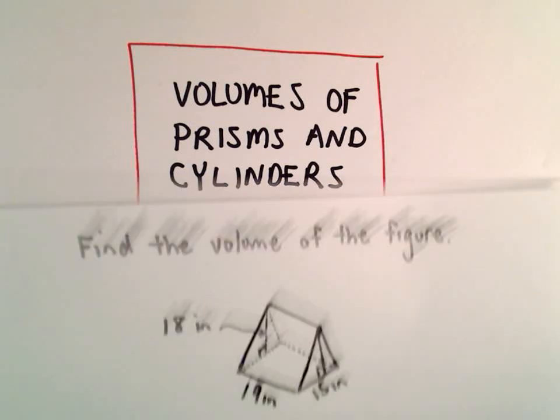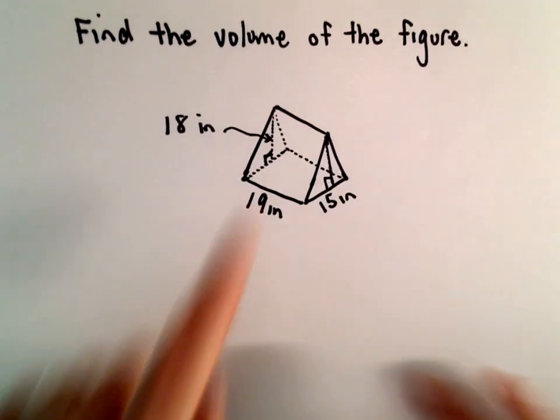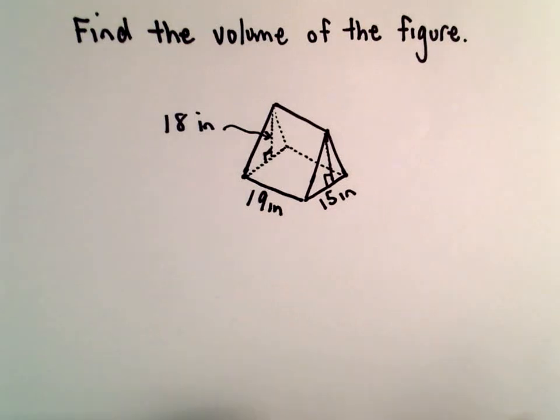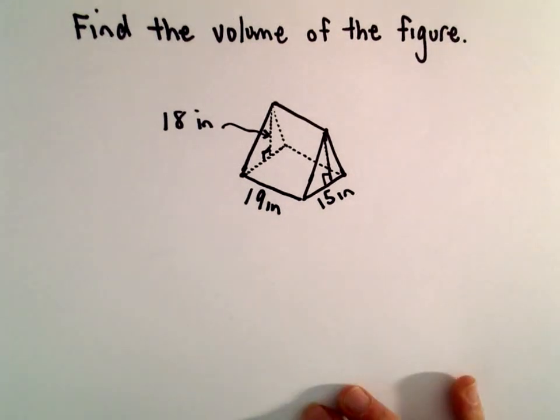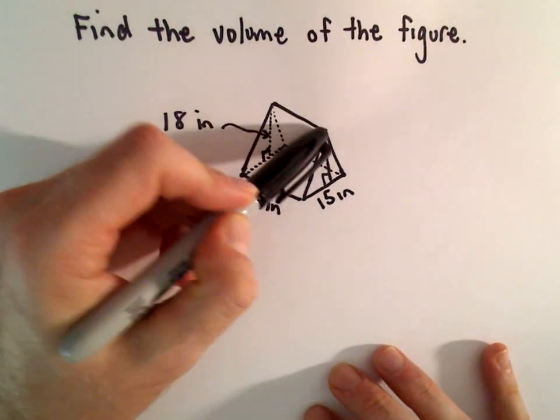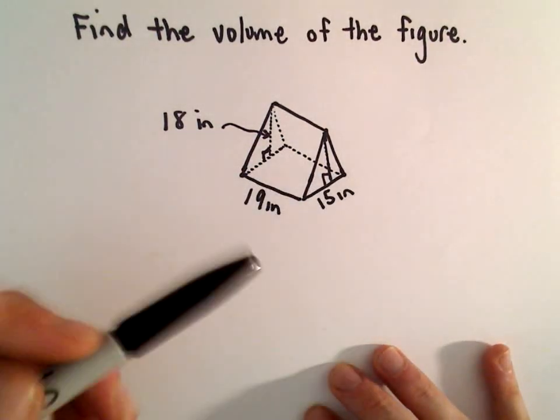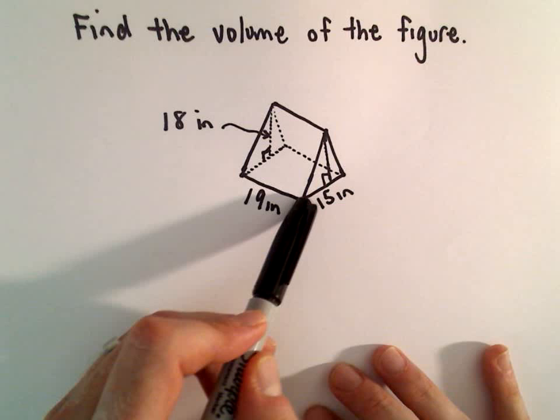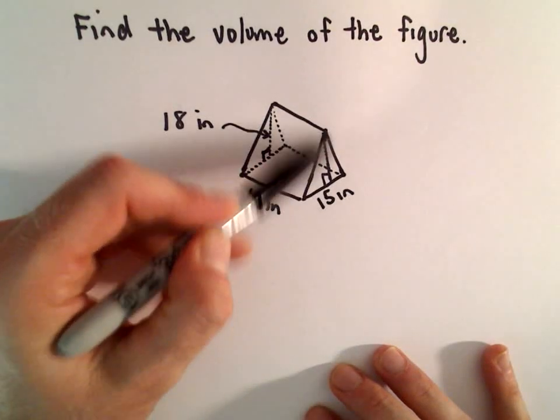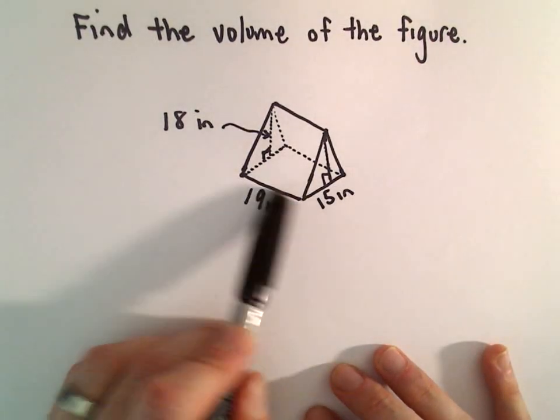Okay, here we're going to find the volume of a shape that basically when I look at it, I kind of see a little tent. So the front face is a triangle, you know, the part you walk in. It's got a width of 15 inches, the height at the tallest point is going to be 18 inches.